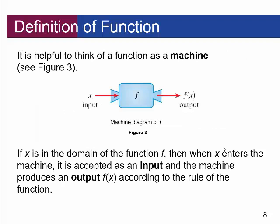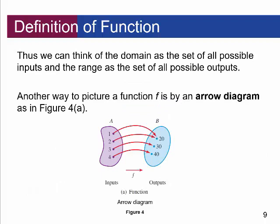It's helpful to think of a function as a machine. You take your input X, plug it into the machine — in our case a mathematical equation — and you get the output F of X. If X is in the domain of F, then when X enters the machine it is accepted as input, and the machine produces the output F of X according to the given rules. The domain is the set of all possible inputs, and the range is the set of all possible outputs.